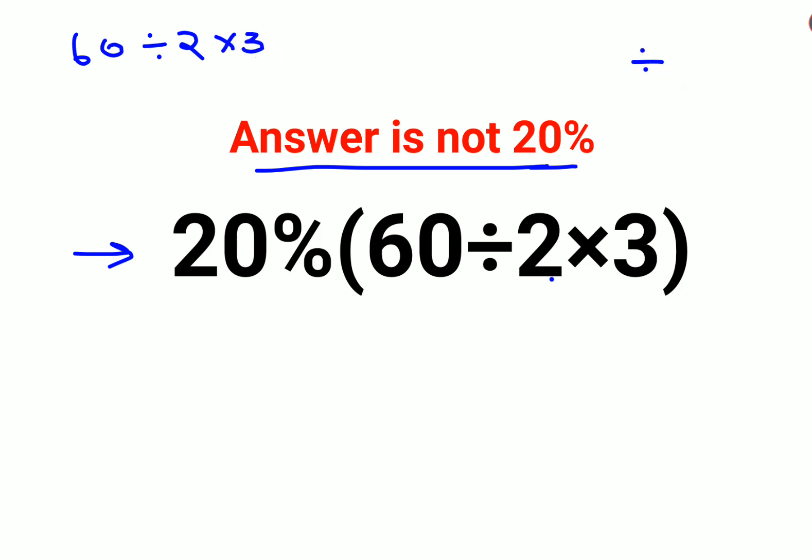Please understand, whenever you have a division and a multiplication sign together, they hold equal precedence. So all you have to do is go from left to right.